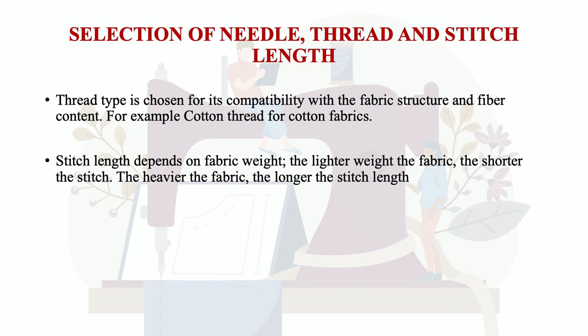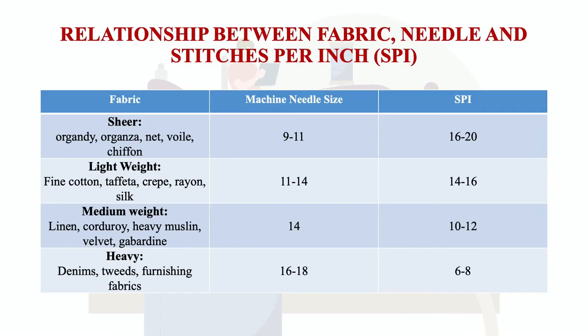Stitch length depends on fabric weight: the lighter the fabric, the shorter the stitch; the heavier the fabric, the longer the stitch. For example, with a lightweight chiffon fabric the stitch length should be very small and close, while with a heavy weight fabric like denim or casement, the stitch length should be longer. The finer the fabric, the shorter the stitch; the heavier the fabric, the longer the stitch.